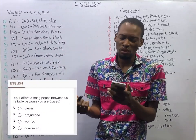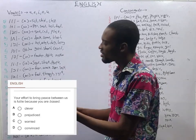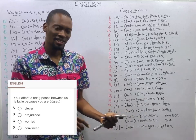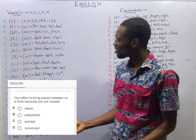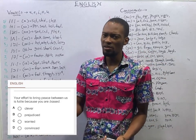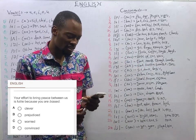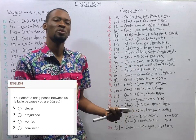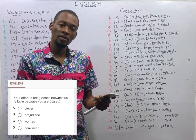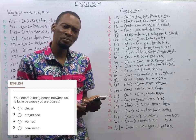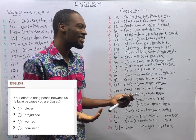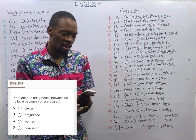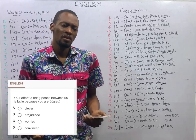'Your effort to bring peace between us is futile because you are biased.' Biased means to be unfair. You are not treating the situation fairly. The word nearest in meaning to biased is not clever — being biased doesn't mean you are clever. It doesn't mean you are worried, and it doesn't mean you are convinced. Which means prejudice is correct. To be prejudiced means to be unfair or to be against someone or something.